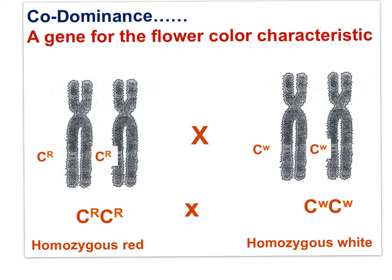Let's look at another example following a gene for flower color. A homozygous red flower plant is crossed with a homozygous white flower plant. Notice that the symbols are different than for the dominant recessive heredity pattern. In codominance, with both alleles contributing in the heterozygote, we use a superscript instead of capital and lowercase symbols.